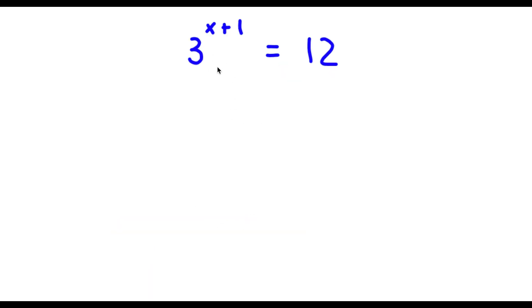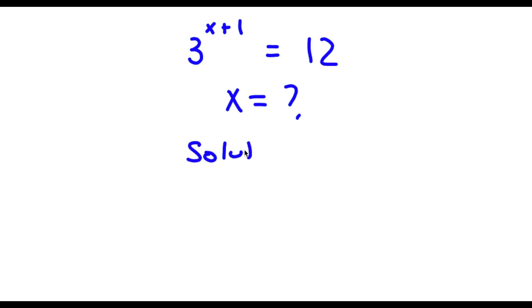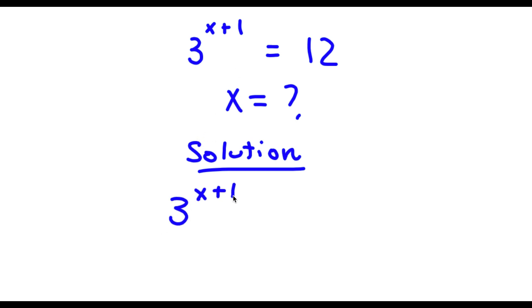Alright, so I have 3 to the power of (x + 1) is equal to 12. I'm going to find the value of x. For my solution, first start with 3^(x+1) = 12.